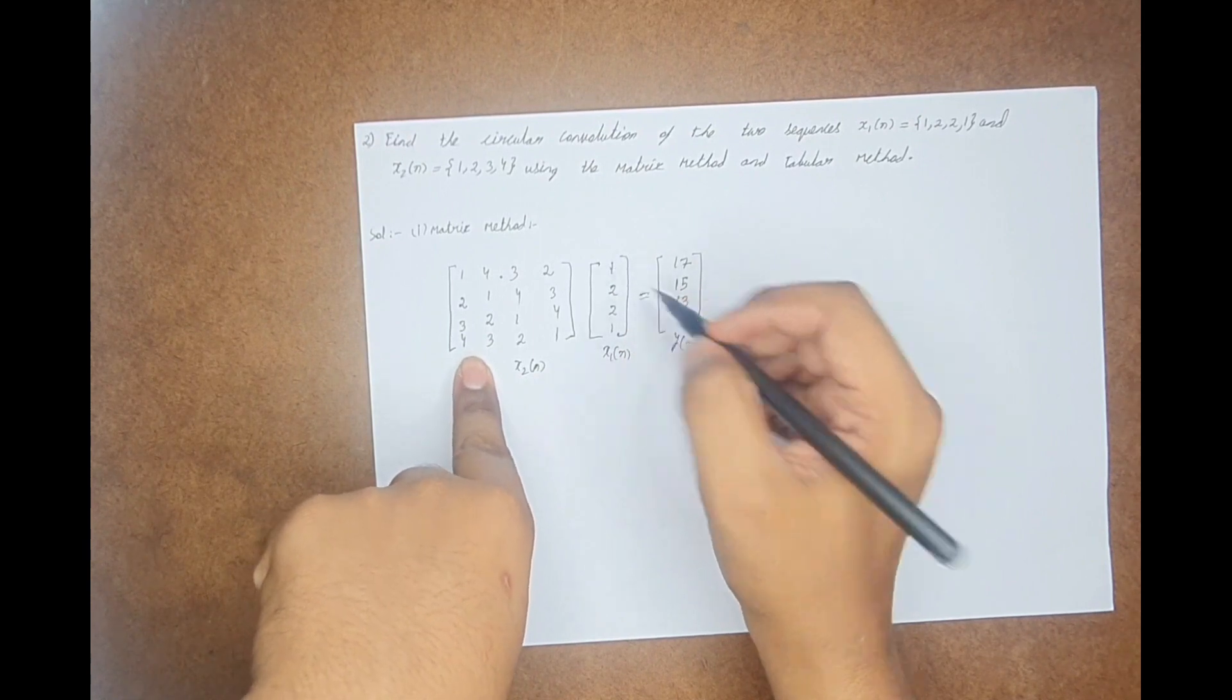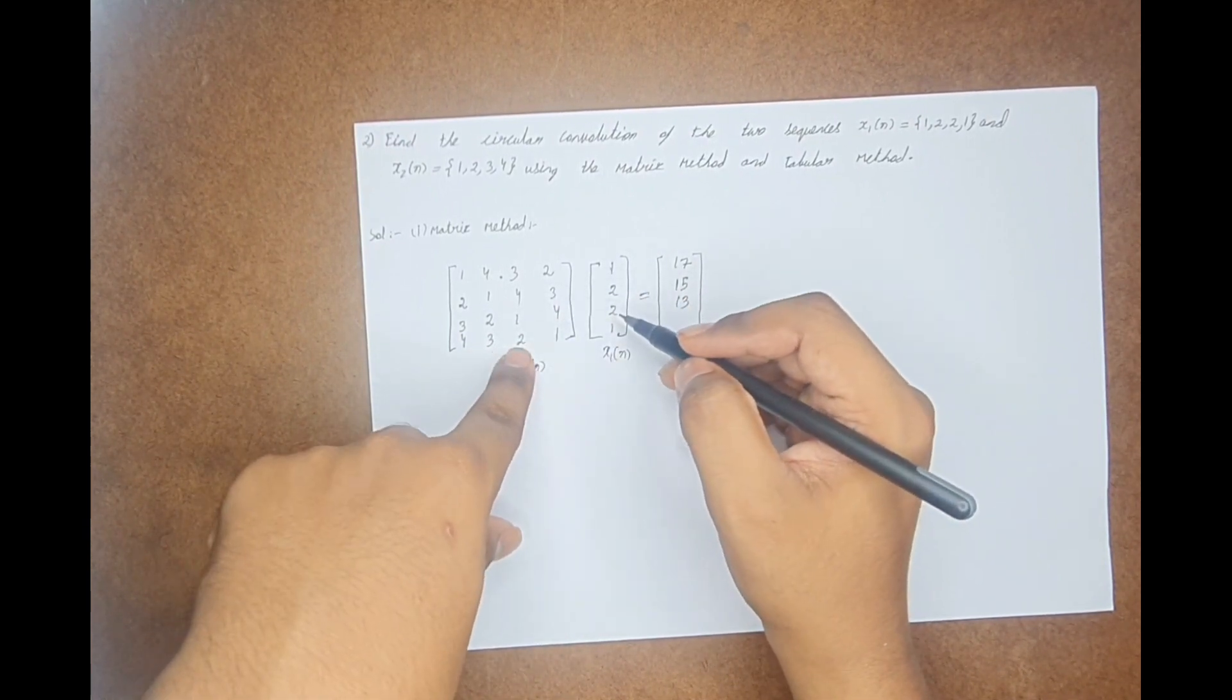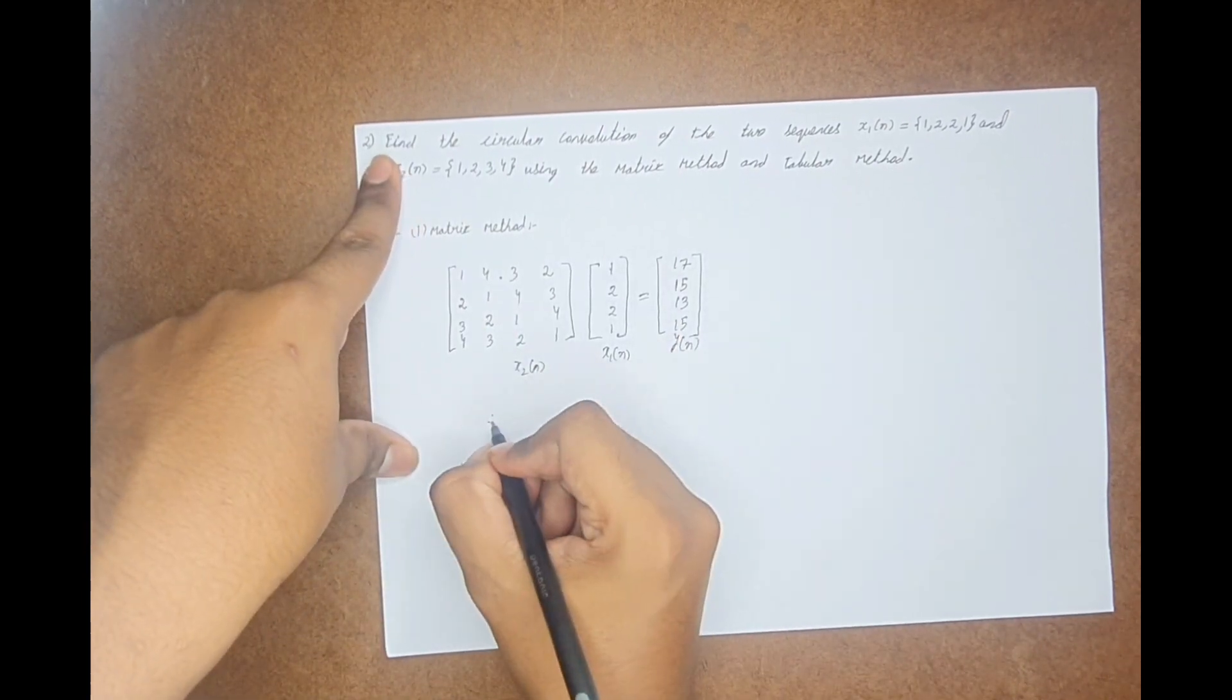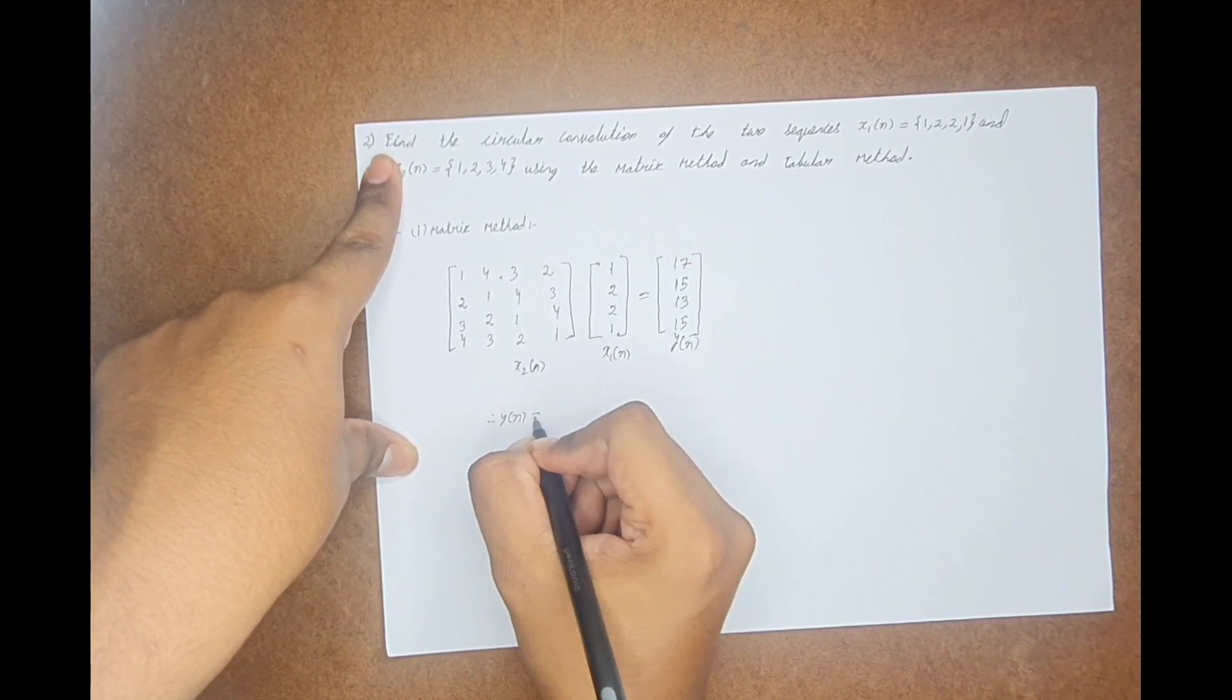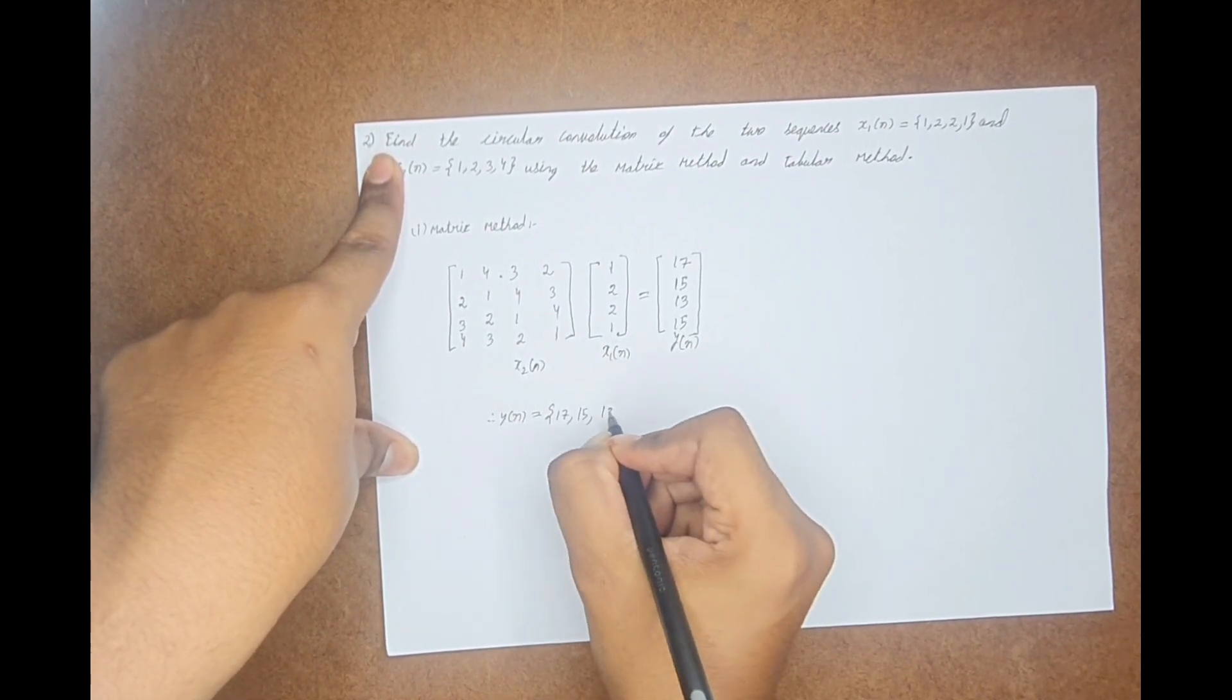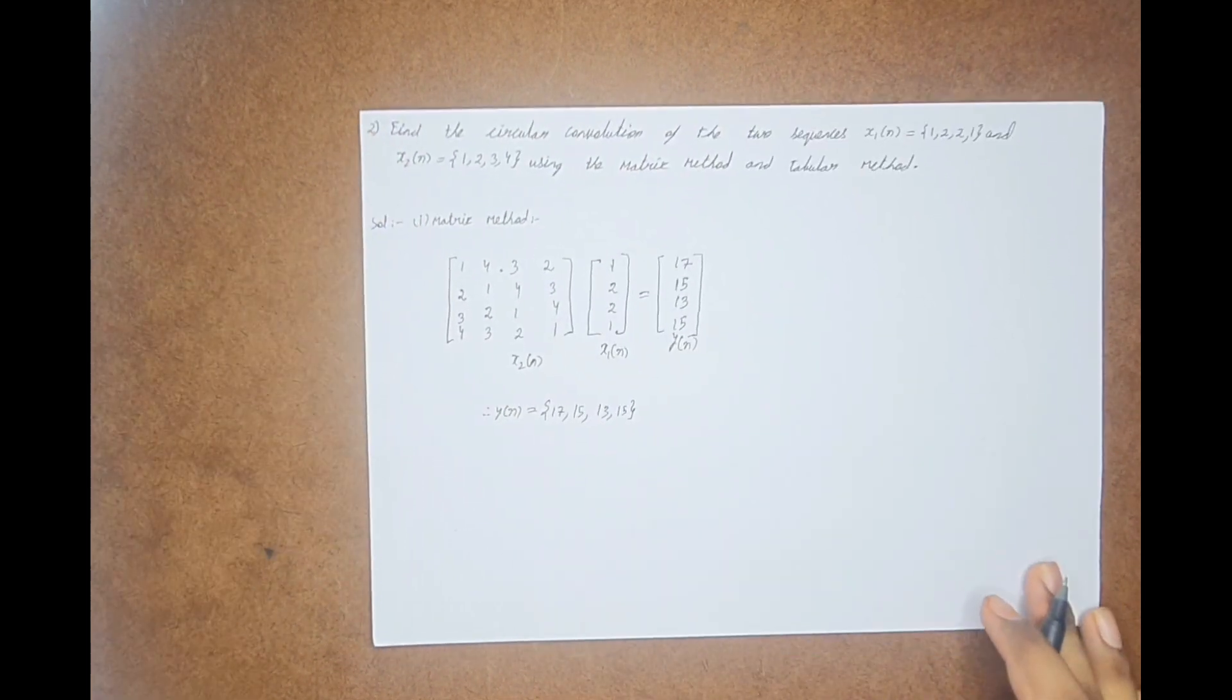Similarly, the last row with this we get y(3), which is 4 plus 6 is 10, 10 plus 4 is 14, 14 plus 1 is 15. So finally, my y(n) is 17, 15, 13, and another 15. This is one of the common methods which everyone knows by using the matrix method.